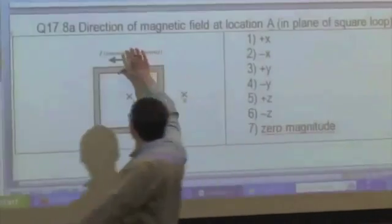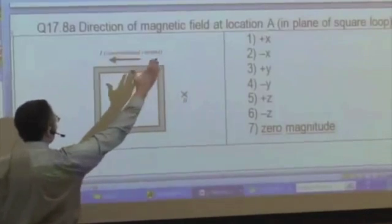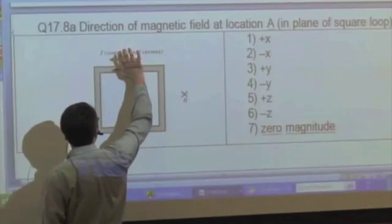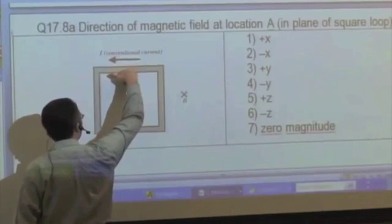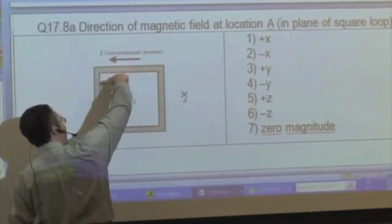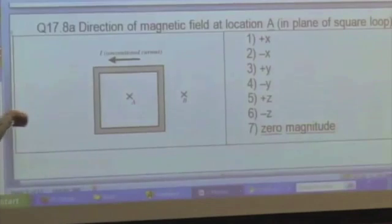So at the top we have, in your choice of right-hand rule, you can either say the thumb points in that direction, and if your fingers wrap around in the direction of magnetic field, when they curl on the inside, my fingers are pointing out.